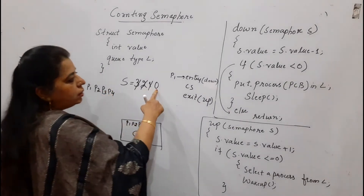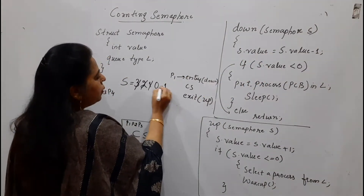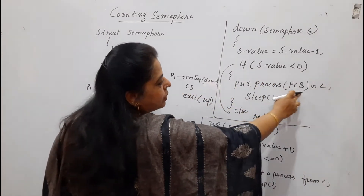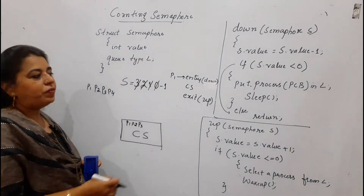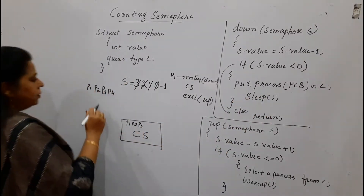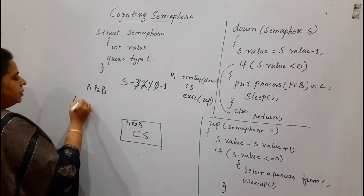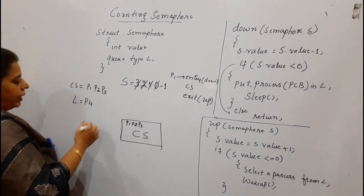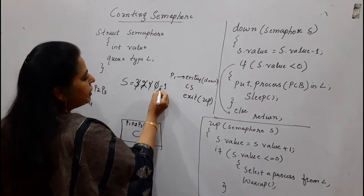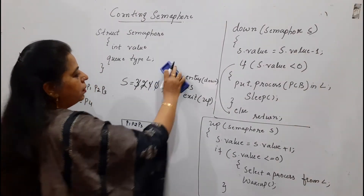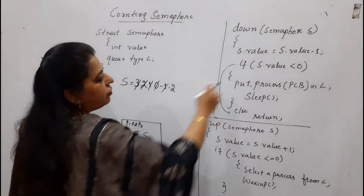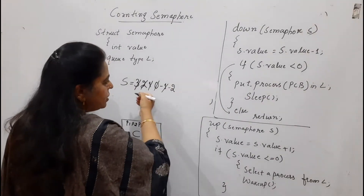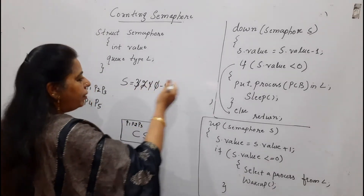P4 wants to enter. The current value is 0. It decrements by 1, so 0 becomes minus 1. Check: is minus 1 less than 0? Condition is true. So P4 is put into the queue — it gets blocked. P5 also wants to enter. The current value is minus 1, decrementing gives minus 2. Check: is minus 2 less than 0? Condition is true — P5 is also put into the queue and gets blocked. Whatever processes keep coming will simply be added to the queue, unless some process already in the critical section comes out.